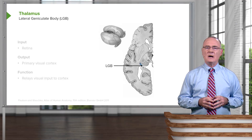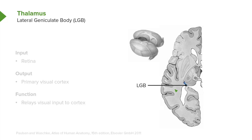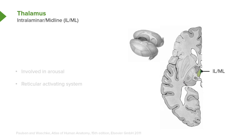If we have a medial geniculate body, it stands to reason that we have a lateral geniculate body, or LGB, visible in this particular area. This is the area that receives information from the retina — that's the input. Output then goes to the primary visual cortex in the occipital lobe. This is a very important relay nucleus of visual input to the cortex for the perception of vision.